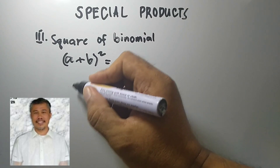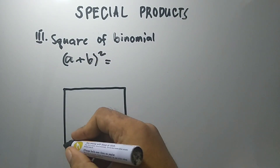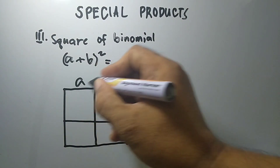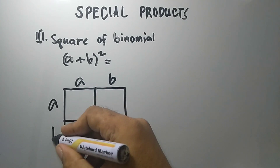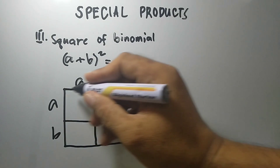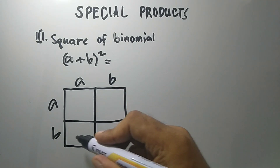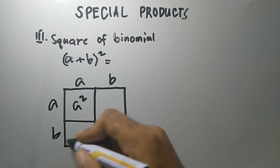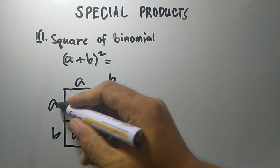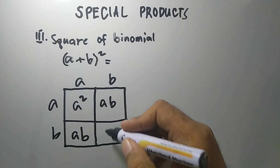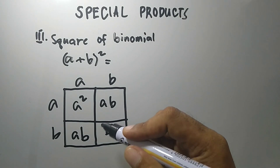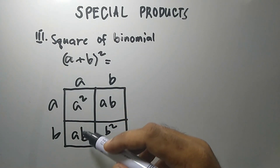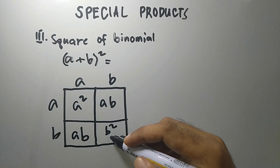Or we can also use tiles. Label this as a, this is b, this is a, and this is b. To get the area of this big tile, we can get the area of the individual pieces and the sum will be our answer. So we have: a times a is a squared, a times b is ab, b times a is ab, and b times b is b squared.